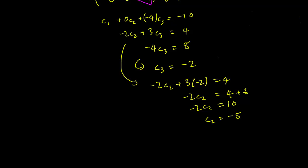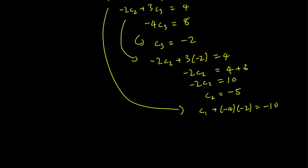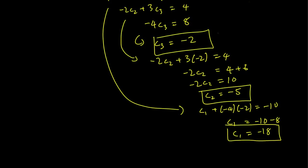And this implies that if we plug into the first equation, we get c1 plus minus 4 times c3, which is minus 2, equals minus 10. So c1 plus 8 equals minus 10. And thus c1 is equal to minus 10 minus 8 equals minus 18. And these are the solutions: c1 is minus 18, c2 is minus 5, c3 is minus 2.